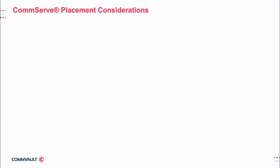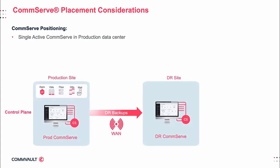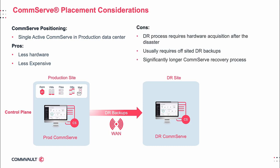In some situations, it may not be possible to have a standby CommServe, dedicated equipment, and connectivity at the DR site. Although it is now becoming increasingly less common, some customers still maintain traditional DR contracts, whereby the provider arrives at their location in a truck and the systems are all built from scratch on hardware that is provided at the time. In this case, the production data center only has a single production CommServe server with no standby in the DR site.